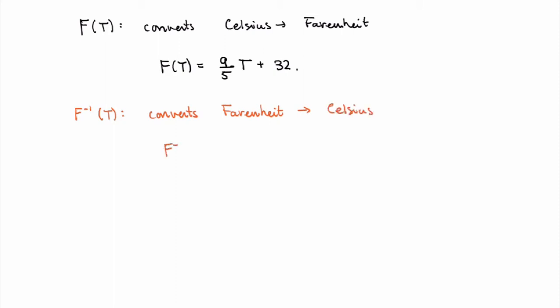What does it look like? You can obtain it by solving the previous equation for T. What you'll get is that the inverse function is given by 5 over 9 times (T minus 32). So you take a temperature in Fahrenheit, remove 32, multiply by 5 over 9, and you get the temperature in Celsius degrees. This is an example of an inverse function, and in this video we'll study the general theory of inverse functions.